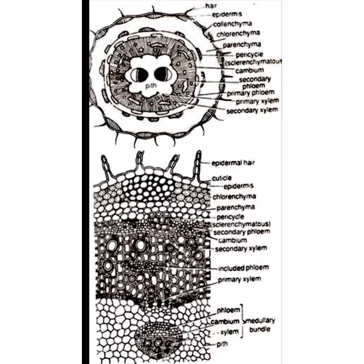Let me tell you the difference between collenchyma and chlorenchyma — they sound a little similar. The main difference is the presence of chloroplast: chlorenchyma contains chloroplast but collenchyma does not. Collenchyma cells are arranged without intercellular spaces because they have deposition of cellulose and pectin.